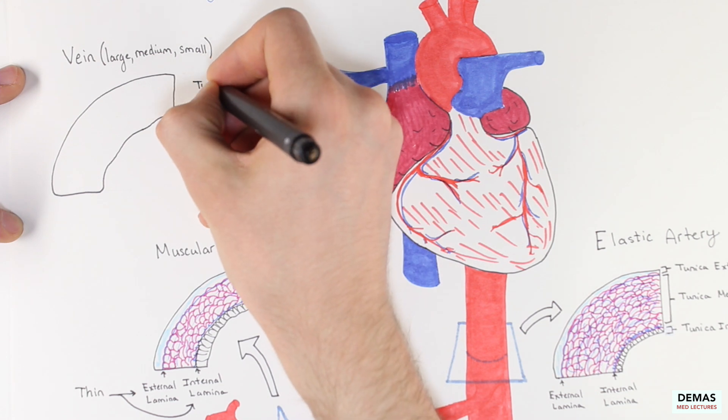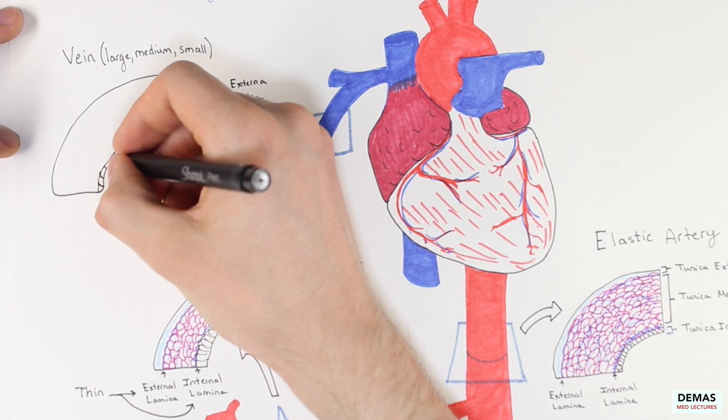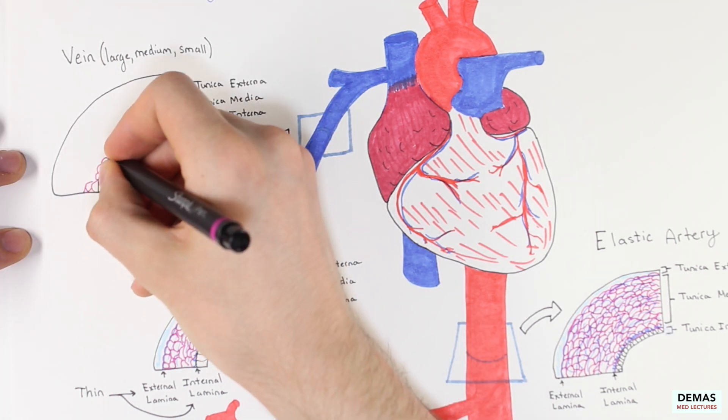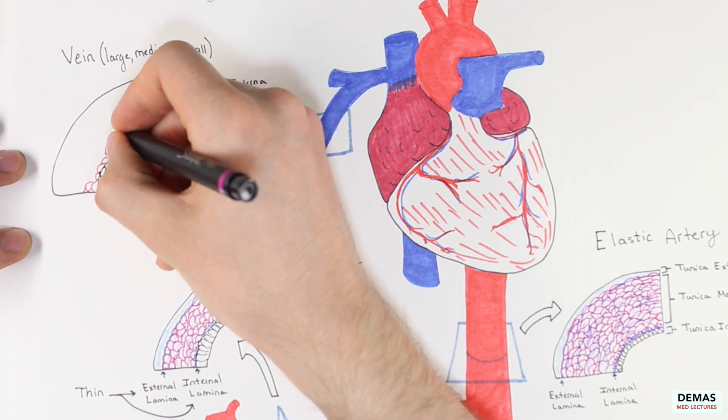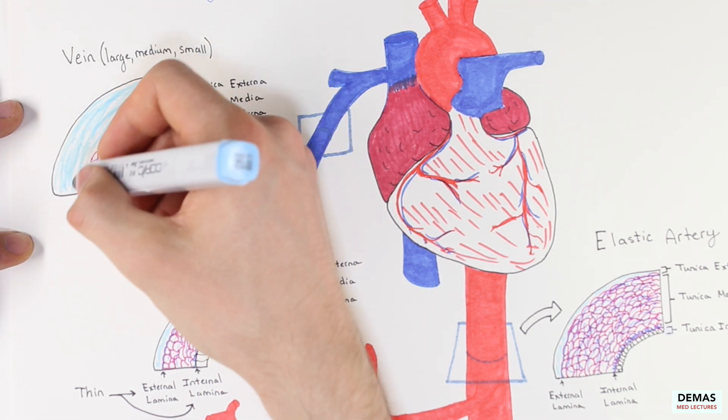Veins still have a single layer of endothelial cells that compose the tunica intima, which I've drawn in here. They have a tunica media, which is thinner than what we've seen previously, and it also has an outer coating of connective tissue that's made of tunica externa.